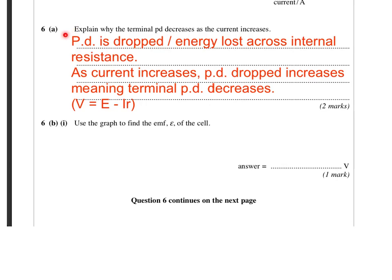We're going to get our first mark for saying that potential difference is dropped or energy is lost, either of those phrases are OK, across the internal resistance inside the power supply. So we know that as soon as current flows, potential difference is dropped or lost across there. That means that there is less voltage available for the terminal PD. So the terminal PD goes down as the current increases. So as the current increases, the PD dropped across the internal resistance increases. Obviously, we can see IR is going to go up if I goes up. And because the terminal PD is E minus IR, if IR goes up, V is obviously going to go down.